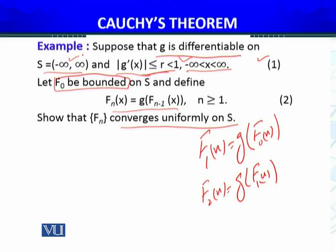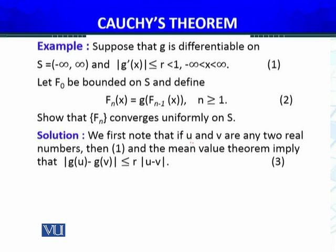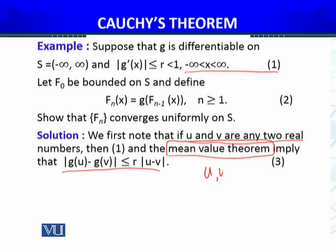From these observations, we try to derive some key results. First, we note that if u and v are any two real numbers, then using condition (1) and the Mean Value Theorem — which was stated and proved in Analysis 1 — I can conclude that for every u, v belonging to the domain of G: |G(u) - G(v)| ≤ R·|u - v|. Note that the input to G in our defined sequence of functions is the function f_{n-1}.